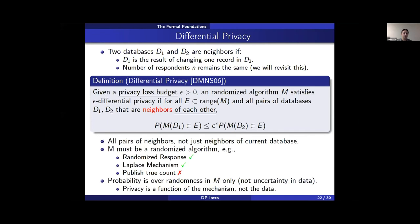A few key points: we must consider all possible pairs of neighboring databases, not just neighbors of the actual database assembled. Mechanisms must employ randomness — we saw this for randomized response and the Laplace mechanism. We cannot just publish the true count: true counts are vulnerable to linking attacks, data reconstruction attacks, and collusion attacks such as senators using the exact tally to determine what the 100th senator did.